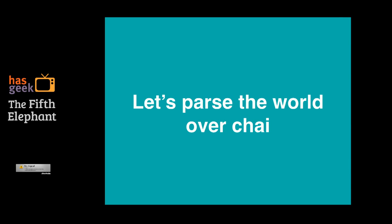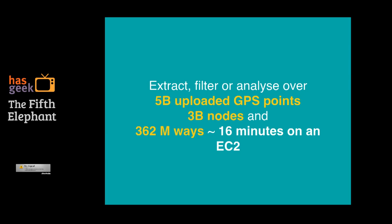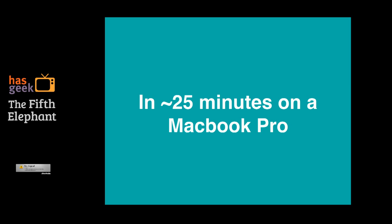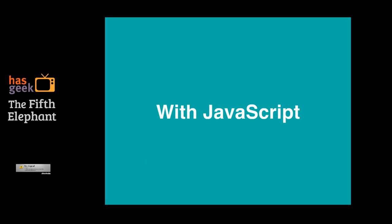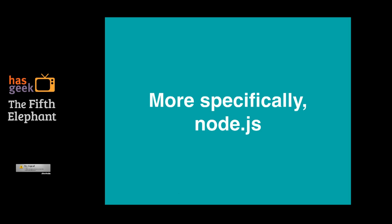Let's parse the world over a cup of chai. What I mean to say is that let's extract, filter, and analyze about 5 billion uploaded GPS points, about 3 billion nodes, about 362 million ways, in about 16 minutes on a very expensive machine like the Amazon EC2, or in about 25 minutes on a less expensive but still expensive machine like the MacBook Pro. And to make this more enticing, we will be doing this with JavaScript, or more specifically, with Node.js.